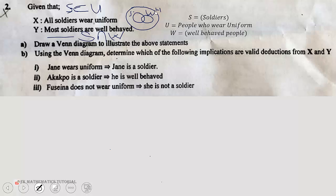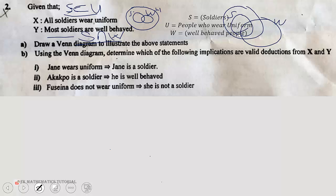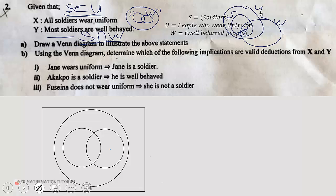Then S must also intersect W, so W can be here to intersect S. We also have another possibility where U is here and S is inside it. S still satisfies all the conditions — W is intersecting S and S is a subset of U. So here are the possible ways we can draw the diagram.